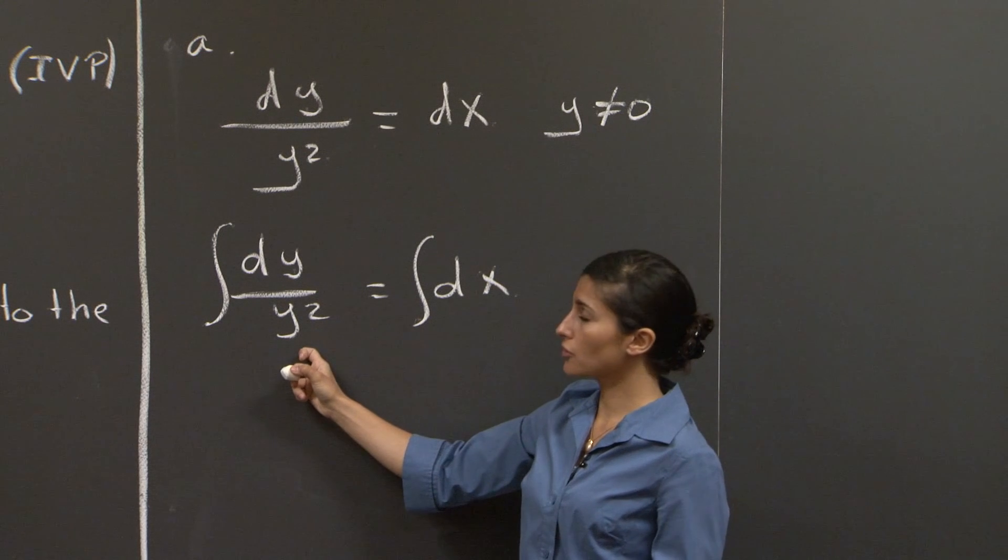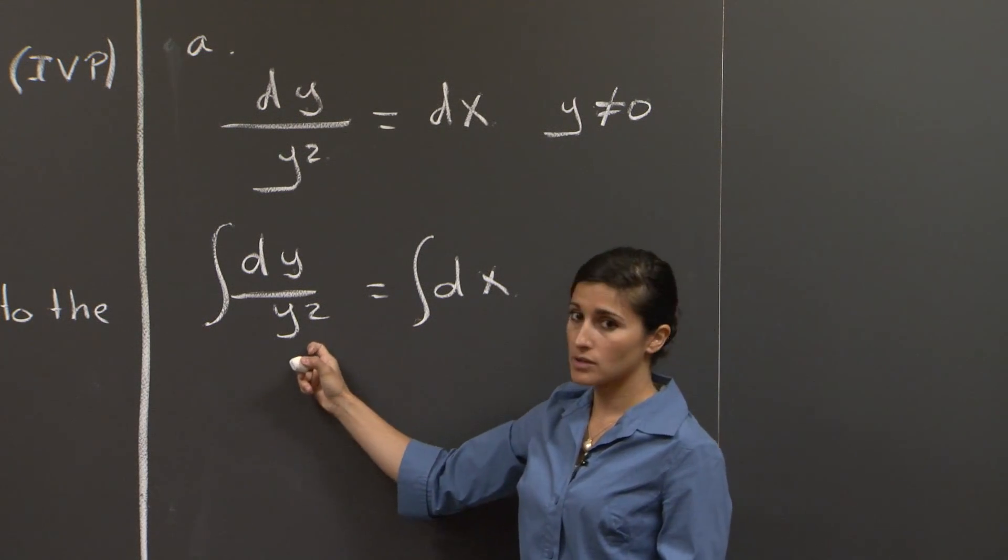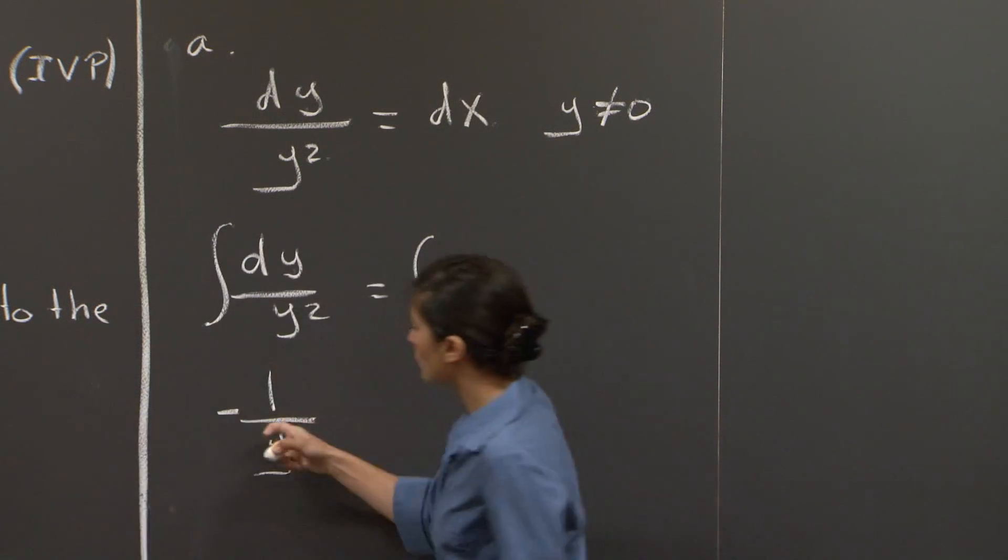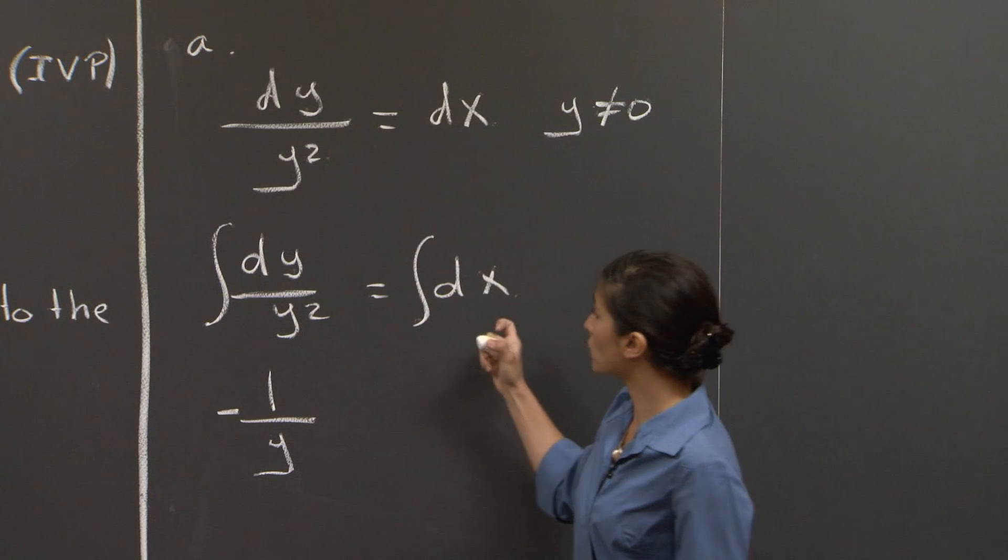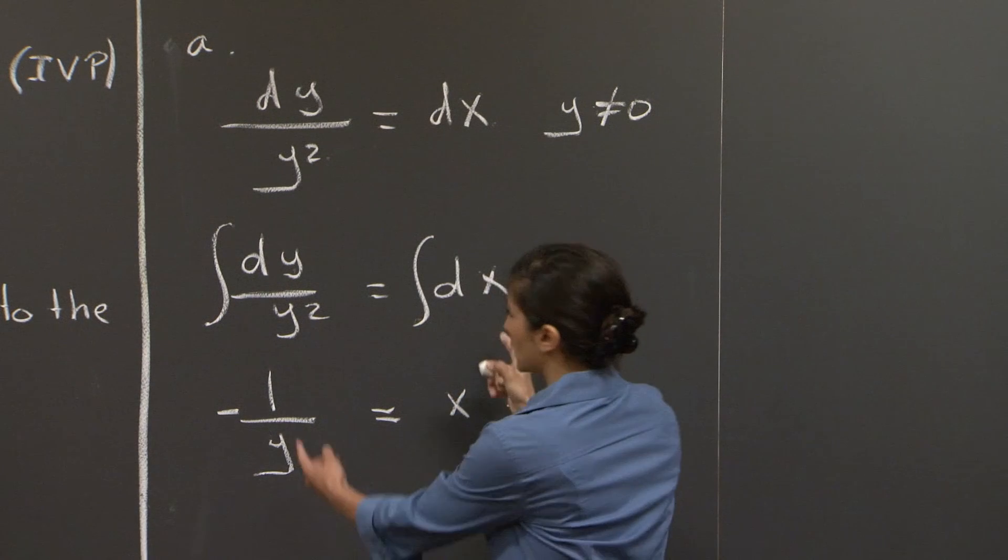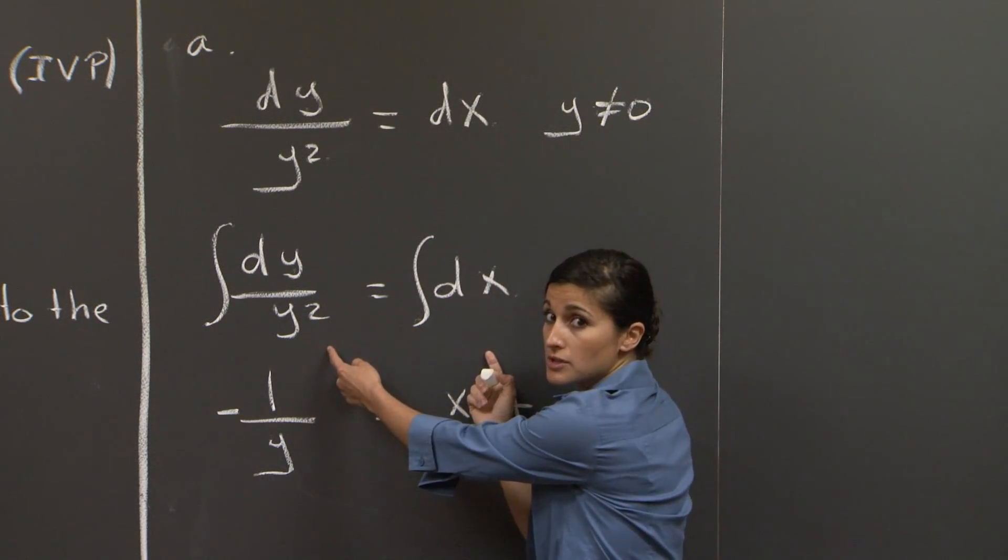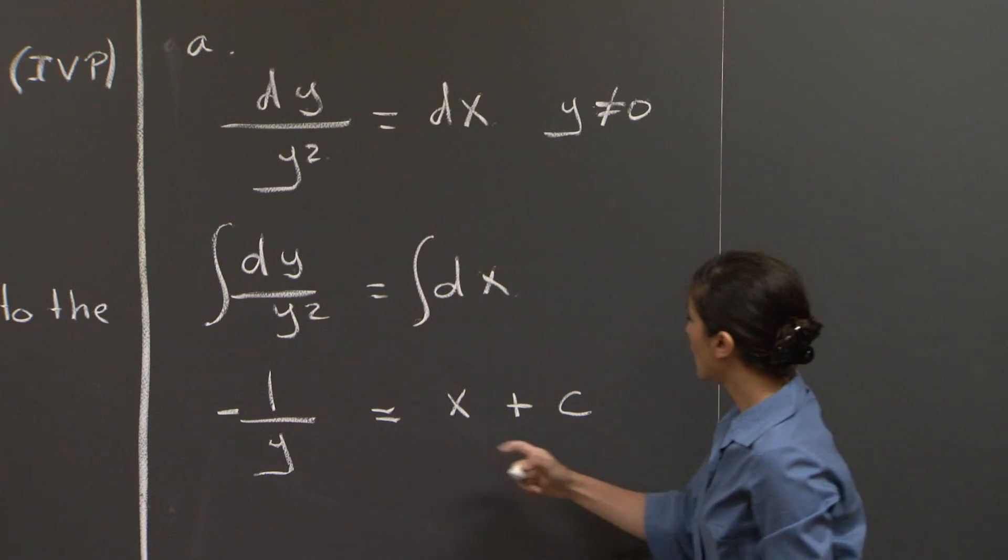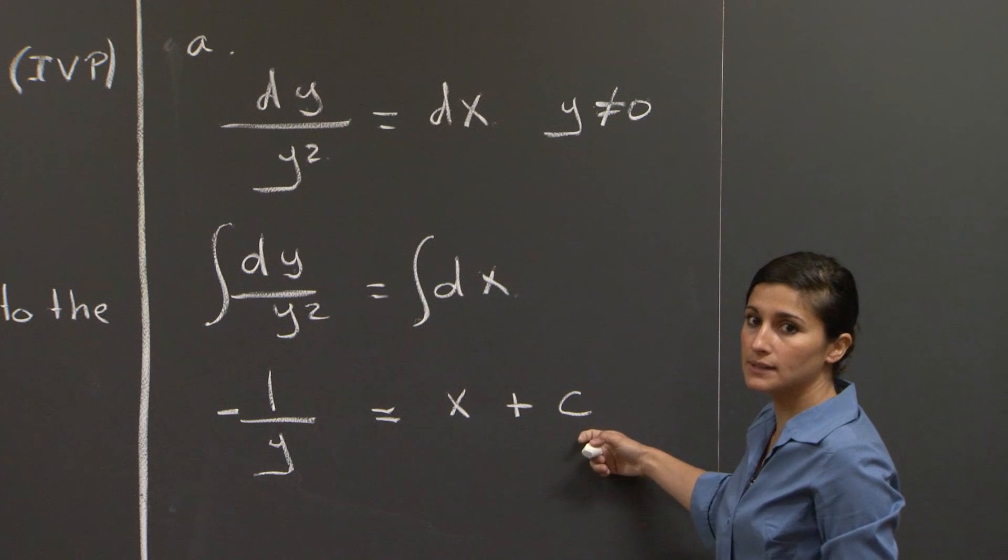The left-hand side is the integral of dy over y squared, so integral of this gives us minus 1 over y. And the right-hand side, integral of dx, is just x. Both sides would give us a constant of integration, but we only need one, because this is a first order differential equation. And so we group them together on the right-hand side with constant c.